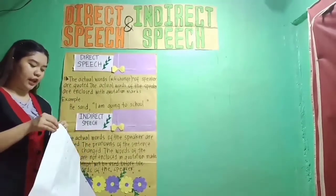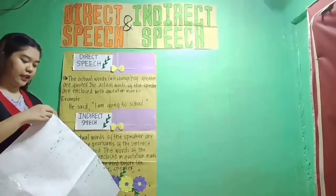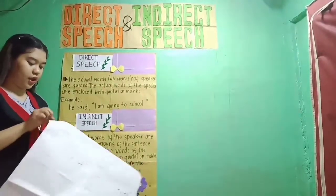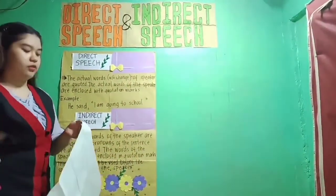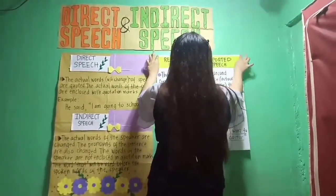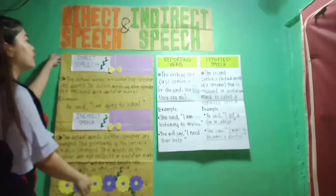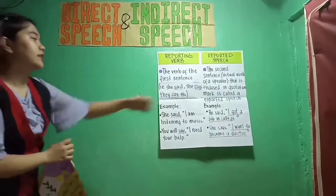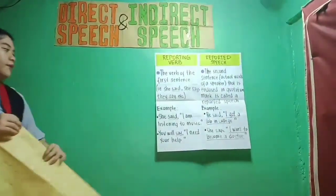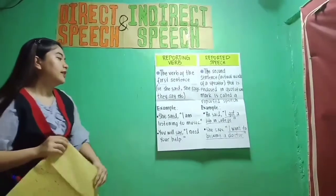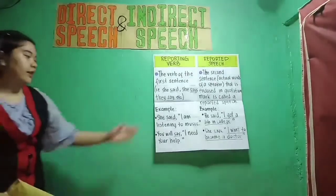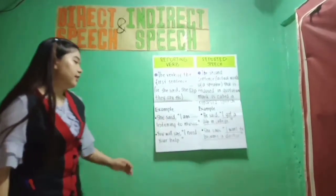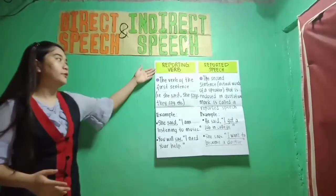Before we learn the basic rules in converting direct speech into indirect speech, let's know the two components of a sentence in direct speech. The first is the reporting verb — the verb of the first sentence, like 'she said,' 'she says,' 'they say,' etc. For example: 'She said, I am listening to music.' The words 'said' and 'say' are the reporting verbs.